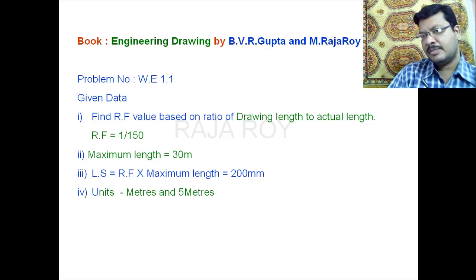And coming to the second step, maximum length is given as 30 meters. So from RF and maximum length you can get length of the scale Ls. Ls equal to RF into maximum length. Now you will get Ls value as 200mm.